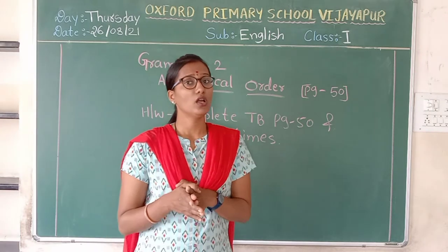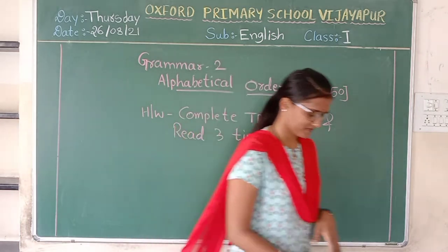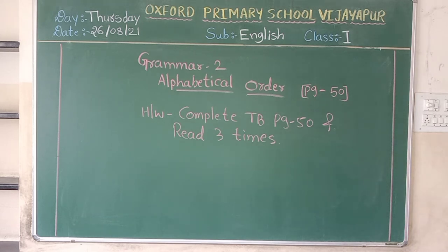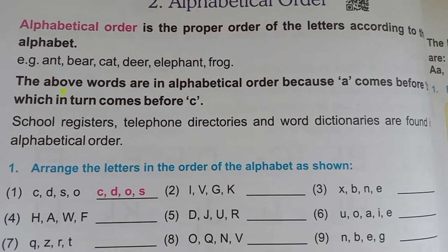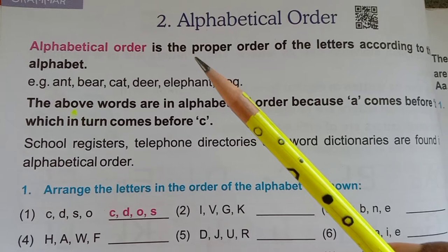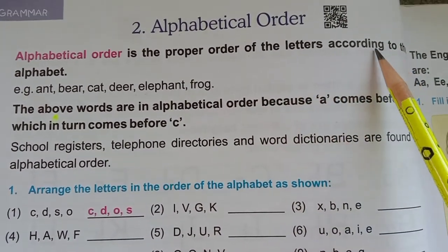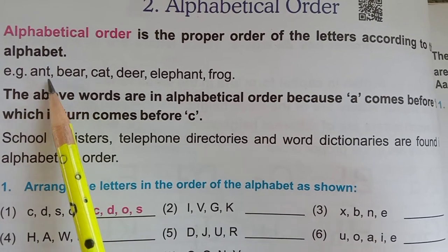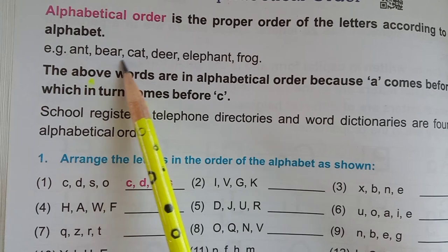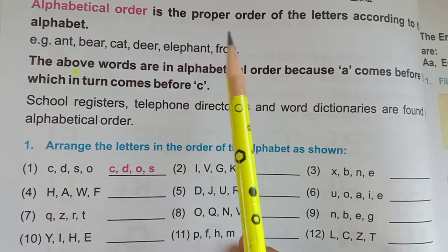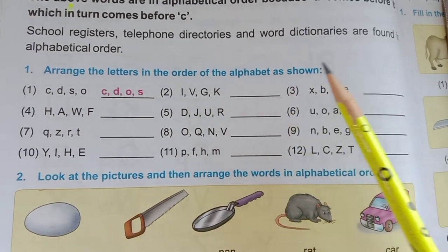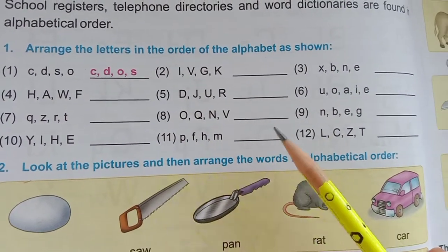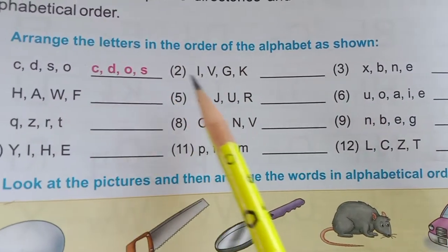Let us complete alphabetical order. Again I will explain about alphabetical order — you have to be perfect. Alphabetical order is the proper order of letters according to the alphabet. For example: bee, cat, deer, elephant, frog — they all start with letters that follow alphabetical order. So arrange the letters in the order of the alphabets as shown. We have already done this. Let us complete the textbook.